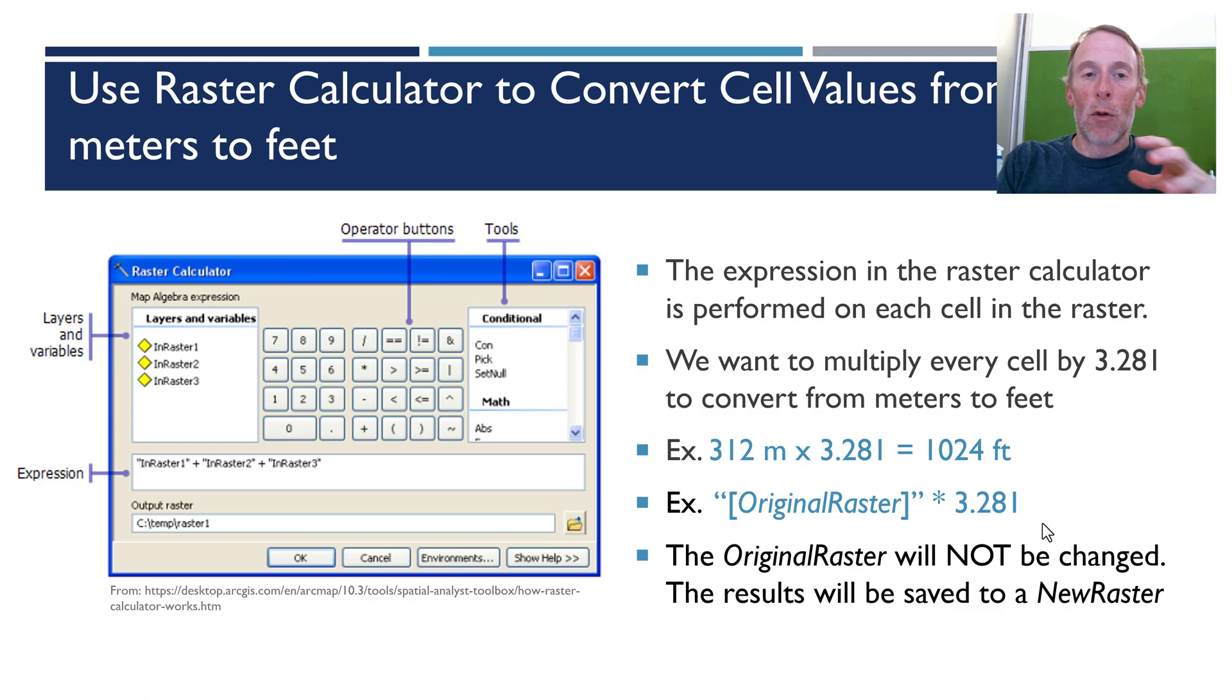Now it's important to note that the original raster that we start with is never going to be changed or edited. The new raster values will be saved in a new version of the raster that we'll have the chance here in the output raster box to name.